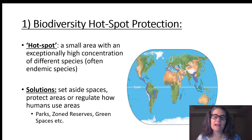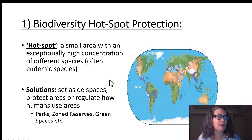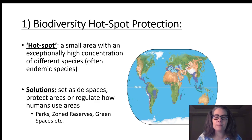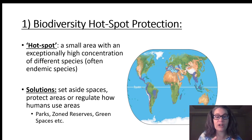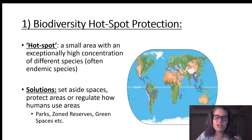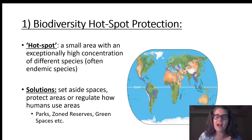First off, biodiversity hotspots. On my map over here in purple, you can see the hotspots on planet Earth. Hotspots are small areas with exceptionally high numbers and varieties of different species, often endemic species. Endemic species are species that only occur in one location on planet Earth. One of the solutions in conservation biology is to set aside or protect those areas with these high biodiversities and high numbers of endemic species.